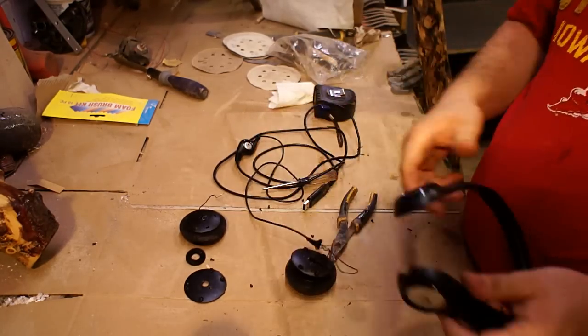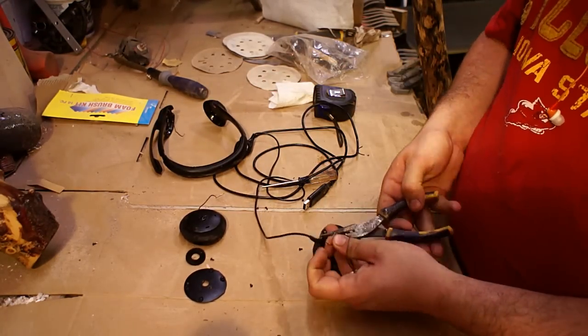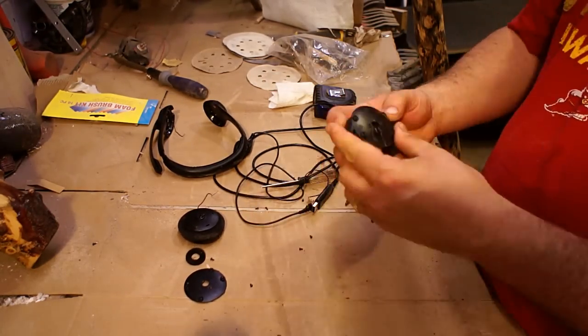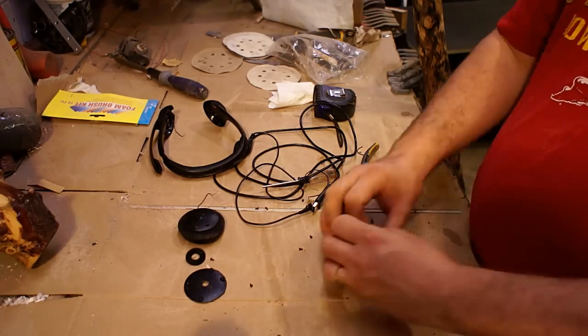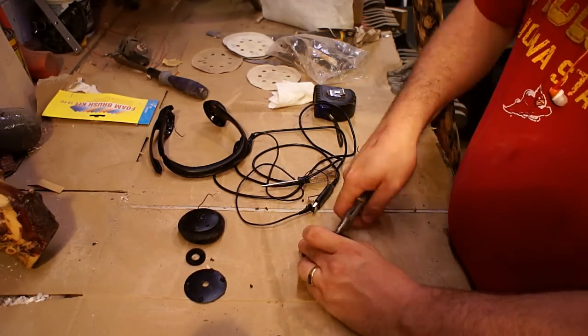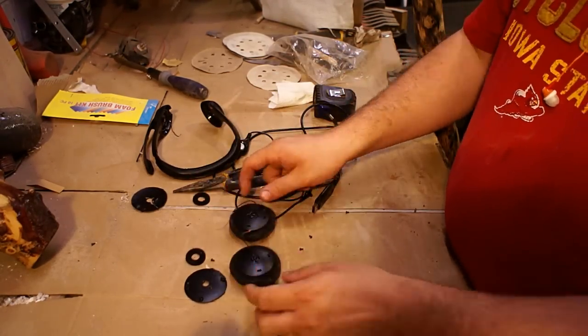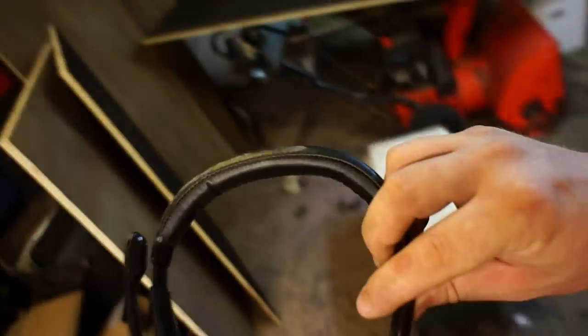So the first thing I have to do is get these headphones apart. I'm trying to keep the longest amount of wire I can on the end of these speakers so I have something to solder to. Another step, of course, is going to be different depending on whatever kind of headphones you found to cannibalize. So with the individual speakers free, I'm ready to throw away the original headphone.